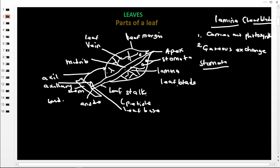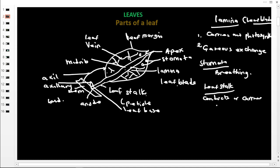The stomata are the actual sites for gaseous exchange — they are used by plants to carry out gaseous exchange, that is, breathing. When we come to the leaf stalk, its work is to conduct or carry water and nutrients from the stem to the midrib.